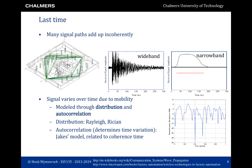In addition, the signal varies over time due to mobility. Mobility is modeled using a statistical distribution and an autocorrelation function. The distributions we've seen are Rayleigh and Rician, which are distributions of the envelope of the channel. We've also seen a specific autocorrelation function, namely Jake's model, which relates to the coherence time — how long the channel remains approximately constant.